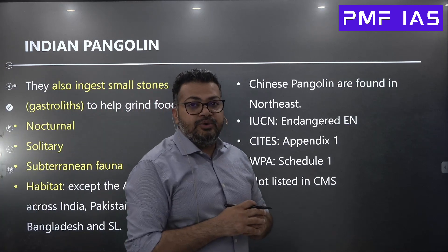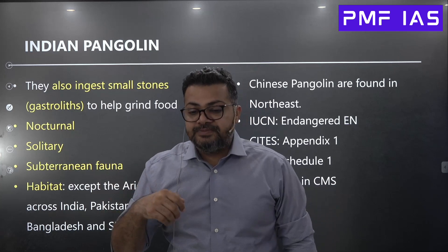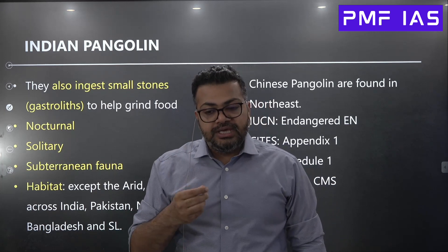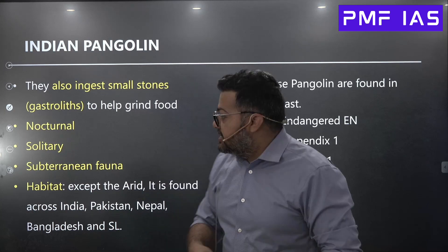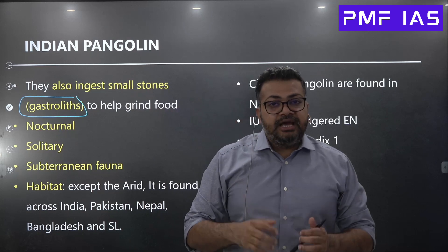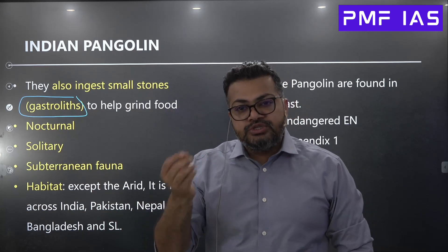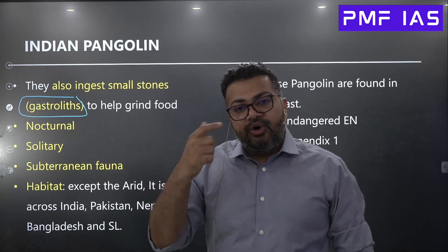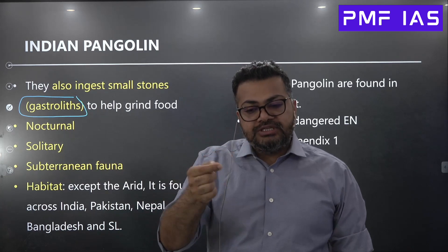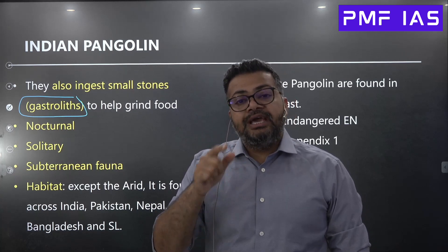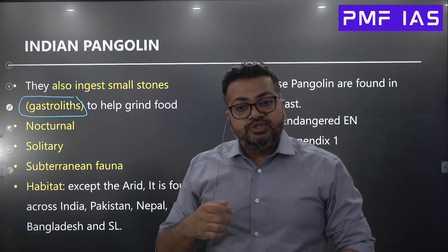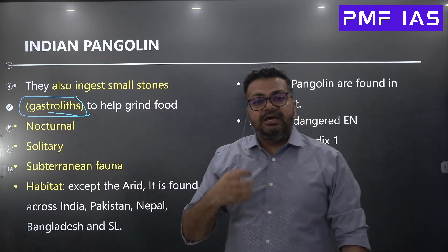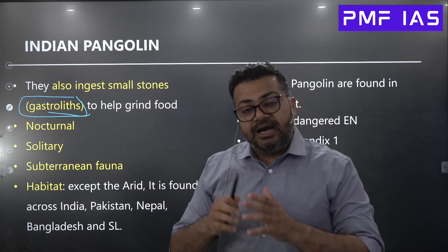Another interesting fact: when pangolins feed on termites and ants using their sticky tongue, the tongue sometimes also picks up small rocks and stones, which accumulate in the stomach. This condition is called gastroliths — small stones deposited in the stomach of an animal, also found in crocodiles and many reptiles. Because pangolins are toothless, these stones play an important role in grinding the food so that it can be digested and nutrients absorbed.